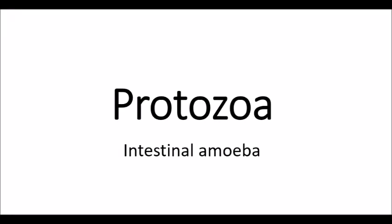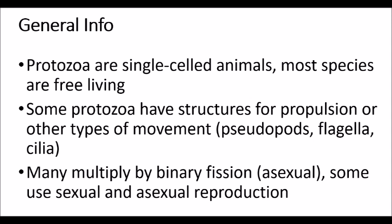Today we're going to be talking about protozoa, the intestinal amoeba. Some general information about protozoa: they are single-celled animals, and most species are free-living. Some protozoa have structures for propulsion and other types of movement — for example, pseudopods, flagella, and cilia. Many multiply by binary fission, and some use sexual and asexual reproduction.